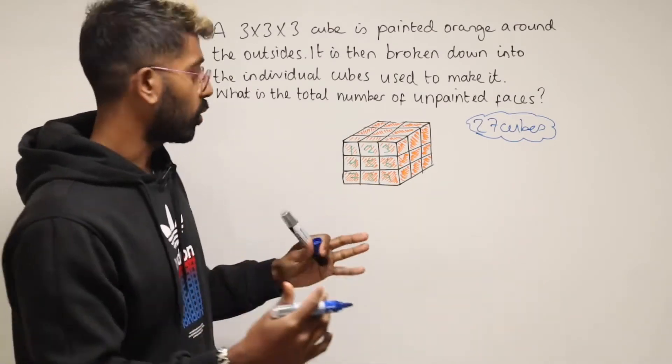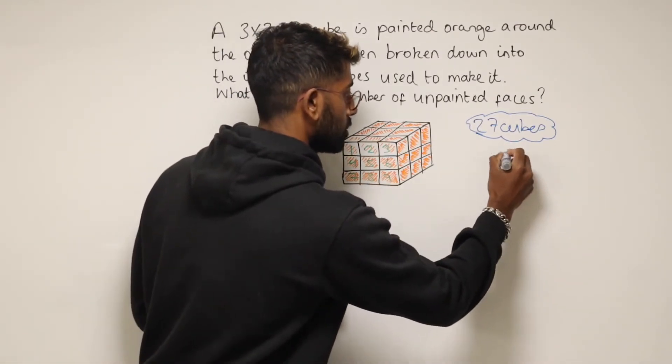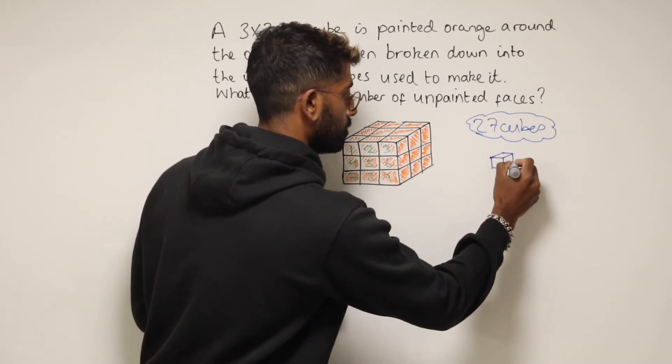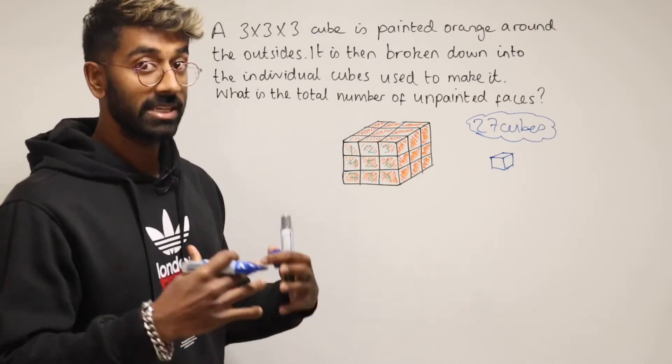Now, let me just draw one of these small cubes. If you've got one of the small cubes, just that over there, we know that each cube has six faces.